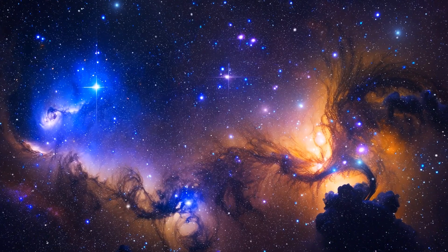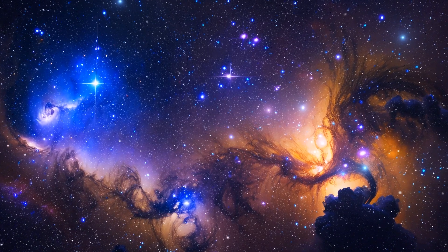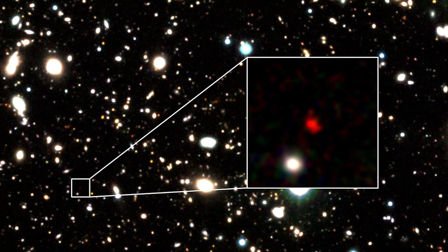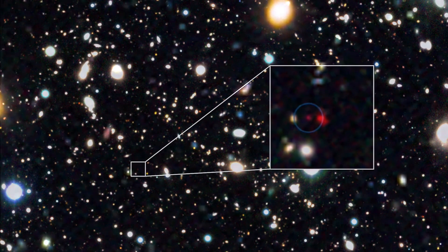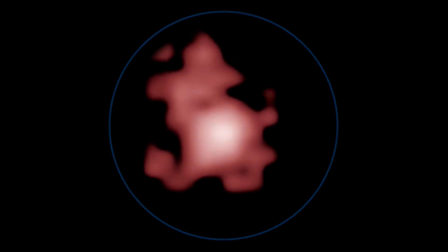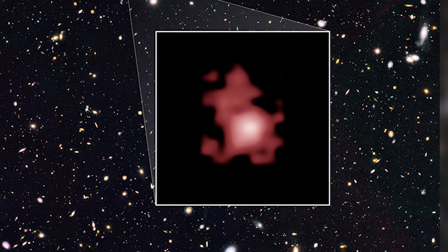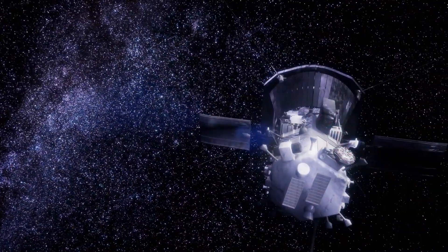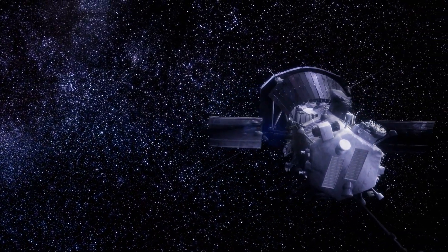They identified a galaxy with a redshift of Z equal to 11.09, dubbed GNZ-11. This redshift indicates that the light from GNZ-11 traveled for over 13 billion years before reaching Hubble's keen eyes. GNZ-11 holds the title of the most distant known galaxy, capturing the imagination of scientists worldwide.